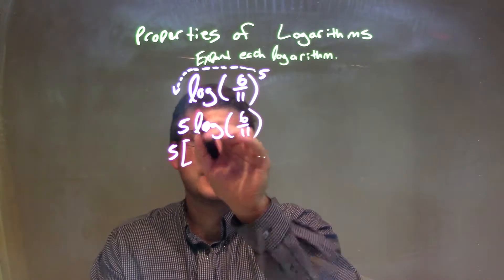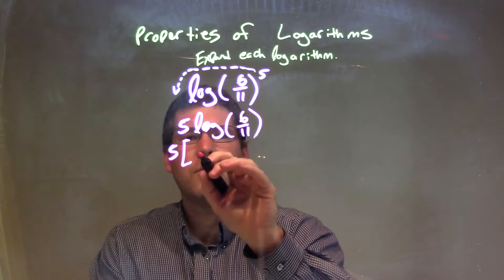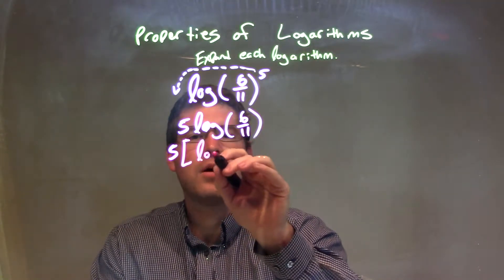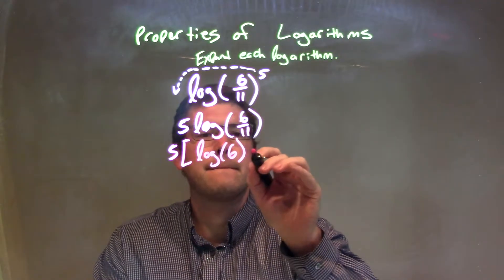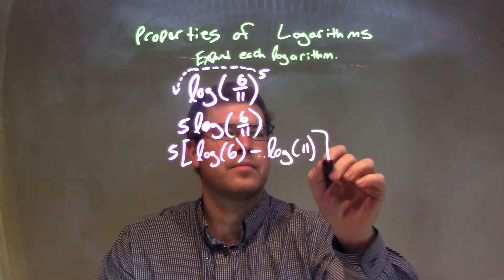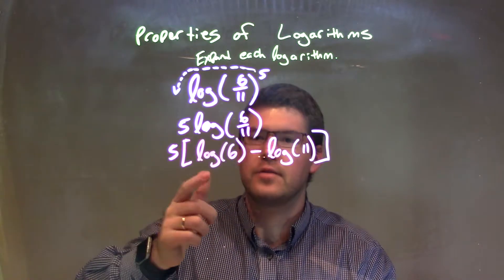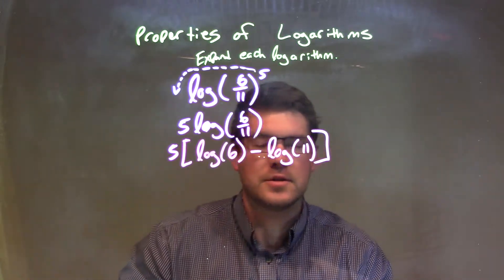It's 5 really times this whole thing, right, log of 6 divided by 11. So if we expand that out, it's really the log of 6 minus the log of 11.